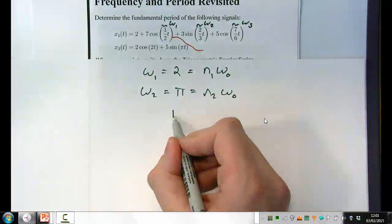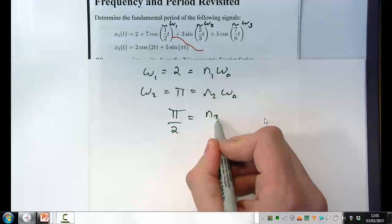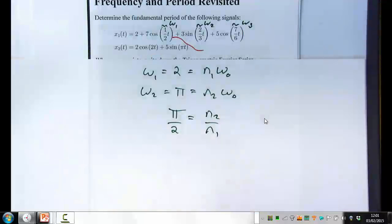And as we know, pi cannot be represented as a rational number. And therefore, there's no integer solutions to that equation. And therefore, x of 2 is non-periodic, and does not have a Fourier series.